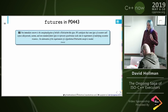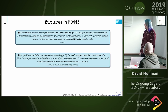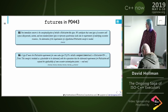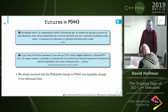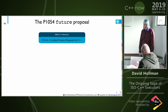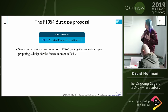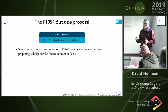In P0443R1, we acknowledged: 'One immediate concern is the conceptualization of std::future-like types and an elaboration of the requirements is needed.' Then in revisions two through seven we said: 'A type F meets the future requirements if it is exactly std::experimental::future' — which is not a very good description of a concept, just a description of a type. Several authors of P0443 did get together to write down what the design of the future concept for P0443 should actually be.